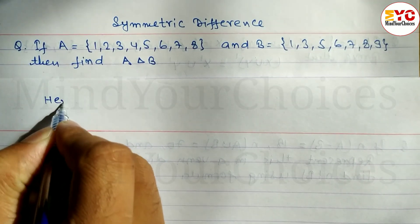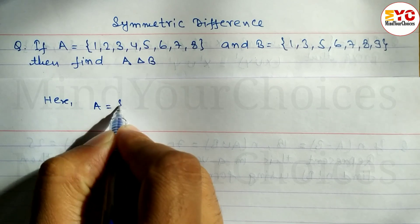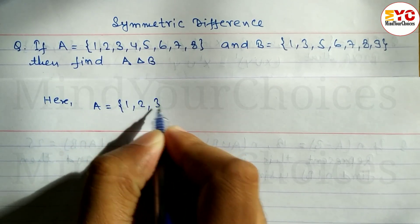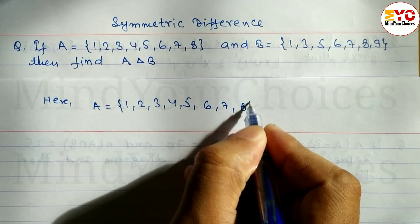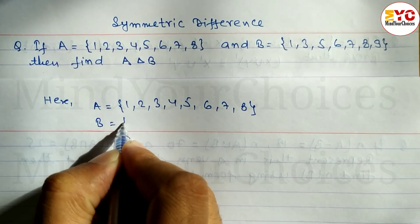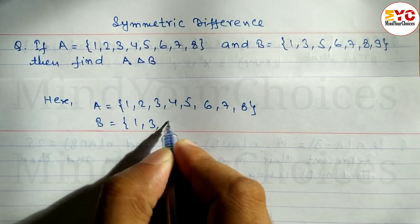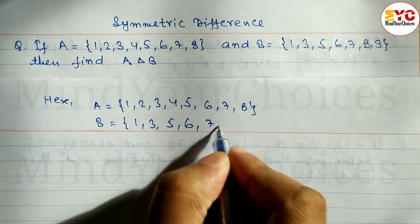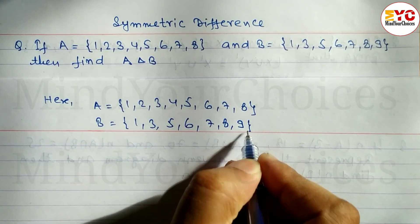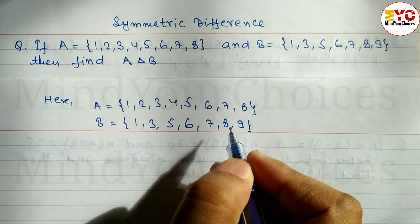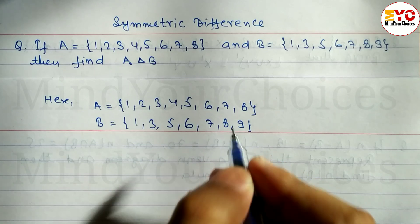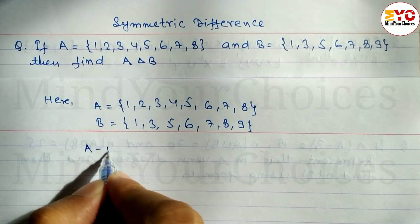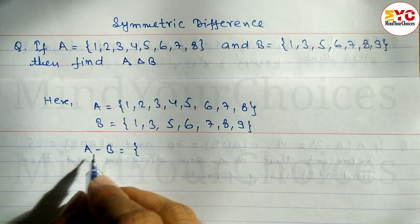Here set A is equal to {1, 2, 3, 4, 5, 6, 7, 8, 9}. To find out the symmetric difference, first of all we have to find out A minus B — the difference of A and B — and the difference of B and A. So let's find out A minus B, the difference of A and B.